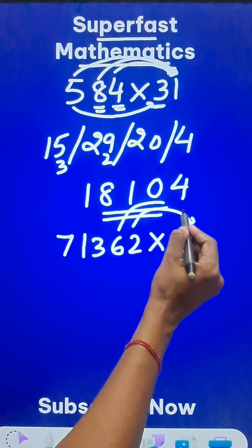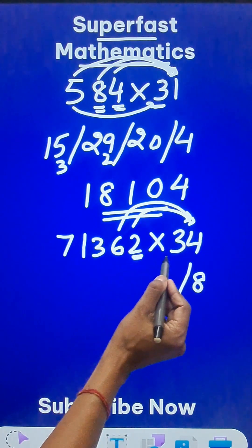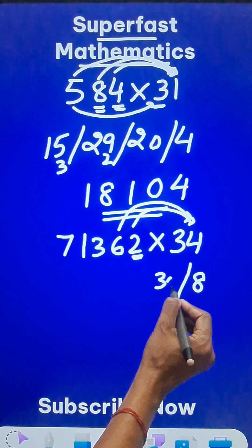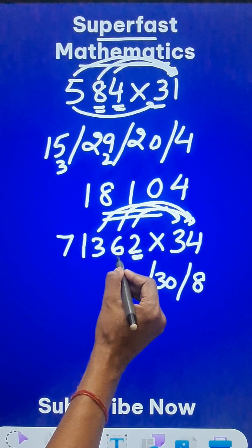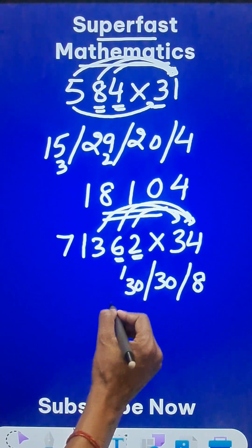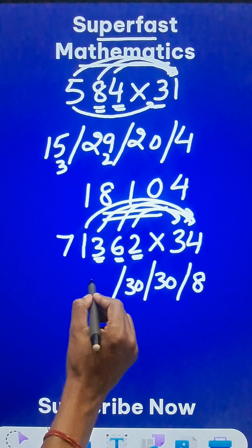And then 6 times 4, 24. And 6 because triple of 2 is 6. So 24 plus 6 is 30. Keep on doing like this. 12 plus 18 is 30 again.